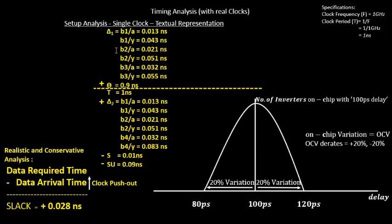When you increase the delay of the cells in the arrival time — increasing the delay of each and every clock cell — that term is referred to as clock push out. A cell that was 55 picoseconds is pushed to more than 55 picoseconds; 32 picoseconds becomes more than 32. The delay of each element is increased by 20%, essentially pushing the clock. We will soon see that this gives a more realistic and conservative analysis.